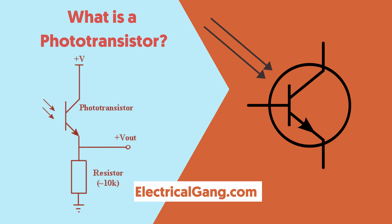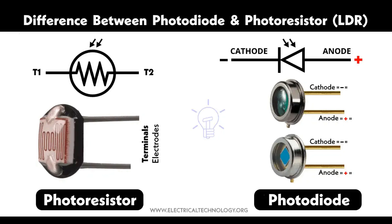Layers and regions: The collector is the region where the majority of charge carriers are collected; it is usually the larger area to allow more light to be absorbed. The base is the central region exposed to light — in a phototransistor it is designed to be thin and sensitive to light photons. The emitter is the region from which charge carriers are emitted, typically heavily doped to facilitate easy flow of carriers.